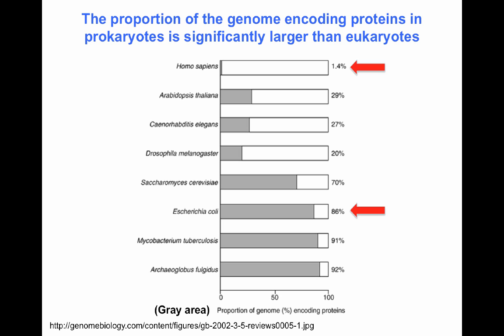Very few prokaryotes have introns — some archaea contain a few. When we look at the proportion of the genome encoding proteins, prokaryotes have a far greater proportion than eukaryotes. Out of the entire human genome, only 1.4% is protein-coding. In E. coli, 86% of the genome encodes proteins. Bacteria including E. coli, Mycobacterium tuberculosis, and Archaeoglobus fulgidus have greater than 86% of their chromosome encoding protein, while eukaryotes like Drosophila, C. elegans, and Arabidopsis have less than 30%.